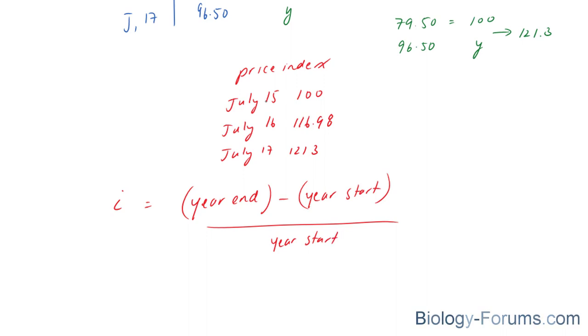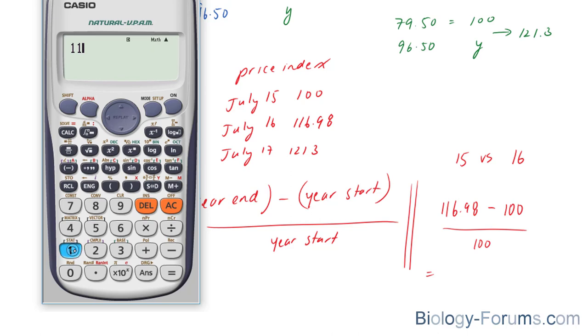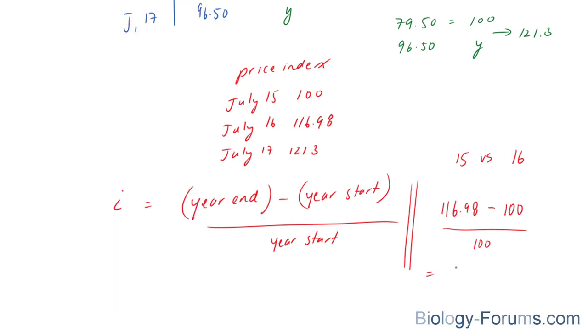And what we're going to do is compare 2015 to 2016, 2015 to 2017, and 2016 to 2017. Let's start by comparing '15 versus '16. The year end would be 116.98 minus the start, which is 100, divided by the start, which is 100. And this will denote our inflation. 116.98 minus 100, divided by 100, times 100%, is equal to 16.98% increase. So there's a cost of living increase of nearly 17% from 2015 versus 2016 for the month of July.